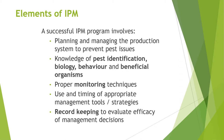There are several elements to a successful IPM program. The first is planning and managing the production system to prevent pest issues from coming in the first place. That is what you're doing when you are looking for disease-tolerant varieties that might not get eastern filbert blight, or when you're selecting an orchard site that is well-drained so you don't get root rots due to excessive water pooling around the roots.